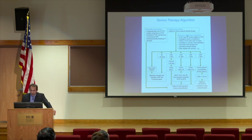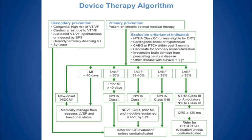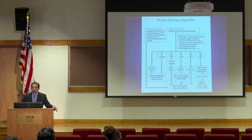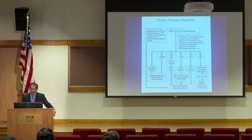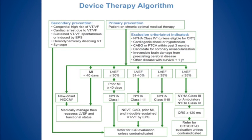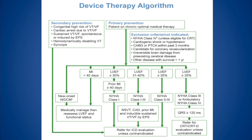Looking at exclusion criteria: New York Heart Association class 4 patients are generally excluded unless eligible for CRT. A class 4 patient with a very wide QRS — mainly left bundle branch block or even a very wide right bundle branch block — should be considered for CRT. But if the QRS is very narrow, there's little benefit, as these patients tend to die from causes other than arrhythmic events. If your patient has cardiogenic shock, hypotension, just had CABG or PCI, is a candidate for coronary revascularization, has significant brain damage, or has a malignancy with less than a year life expectancy, there is no benefit from an ICD.